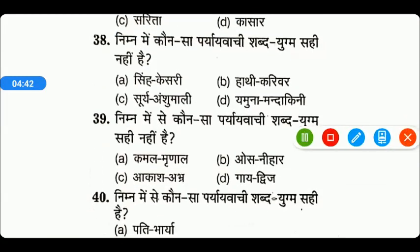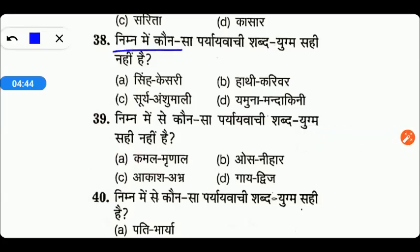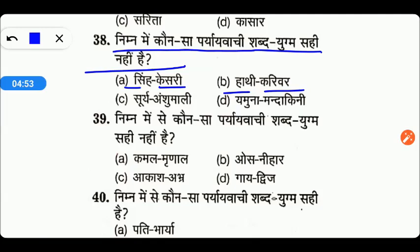Next आते हैं: निम्नलिखित में से कौन सा पर्यायवाची शब्द युग्म सही नहीं है? यहाँ पर हमें शब्द युग्म देखना है। तो friends, यहाँ पर जो सही शब्द युग्म नहीं है वो है D — यमुना का मंदाकिनी।